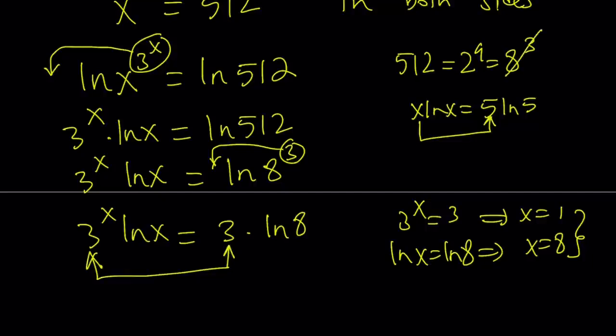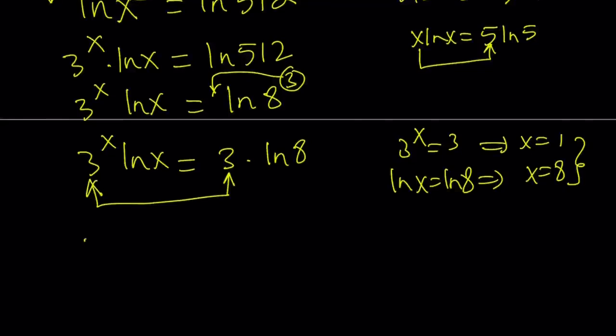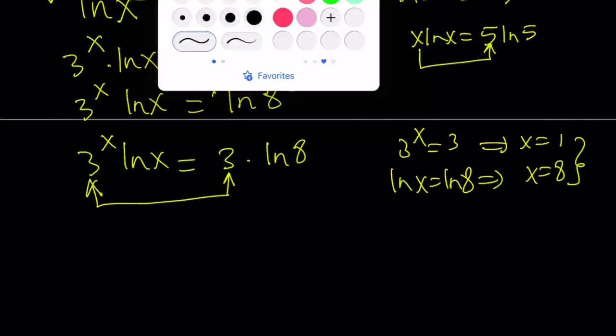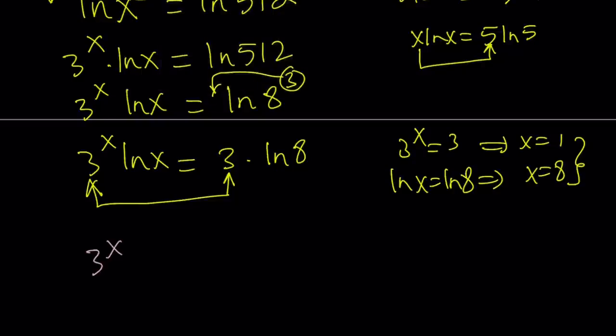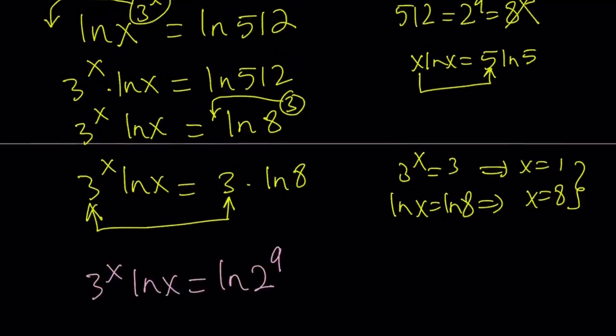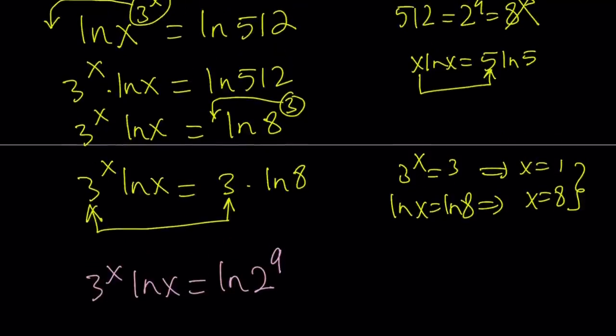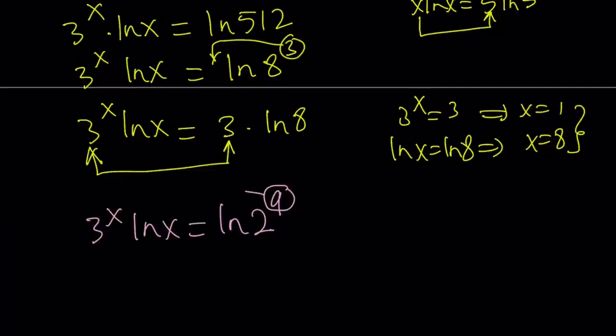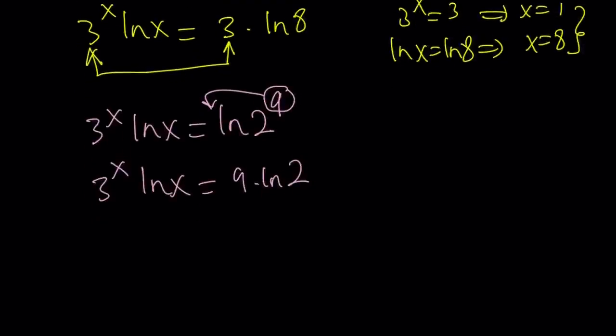Which means I end up with 2 to the 9th power. So let's go ahead and do that. We get 3 to the x ln x equals ln 2 to the 9th power. So it's not totally guess and check. I looked at different ways I can write 512 as a power. And then I tried 8 to the 3rd, it didn't work. Now I'm testing 2 to the 9th power. We're going to go ahead and move the 9 over here. Just like before, 3 to the x ln x equals 9 times ln 2. And then from here, I'm going to do the same thing.